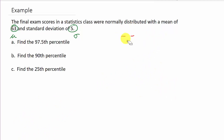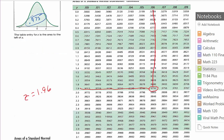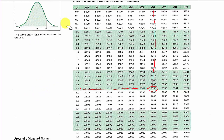Now let's look at the second example: finding the 90th percentile. On the standard normal curve, here's zero and here's z. The 90th percentile means an area of 0.9 to the left of z. We go to the chart and look for 0.9.